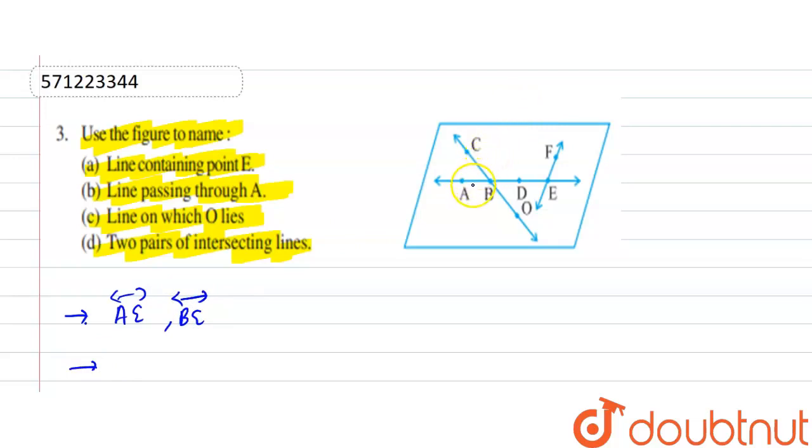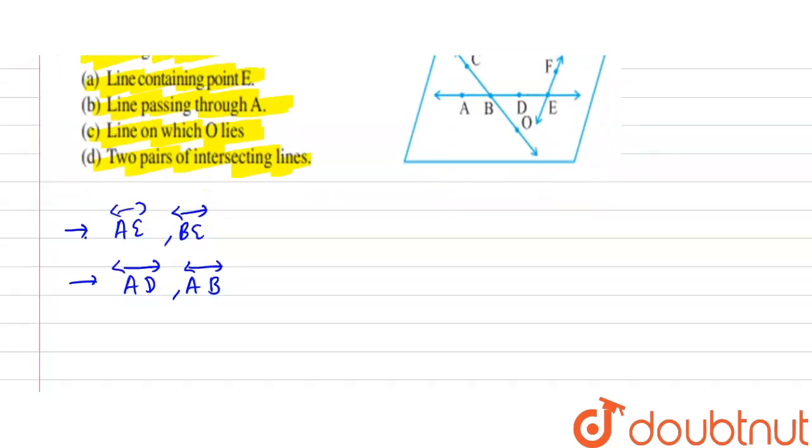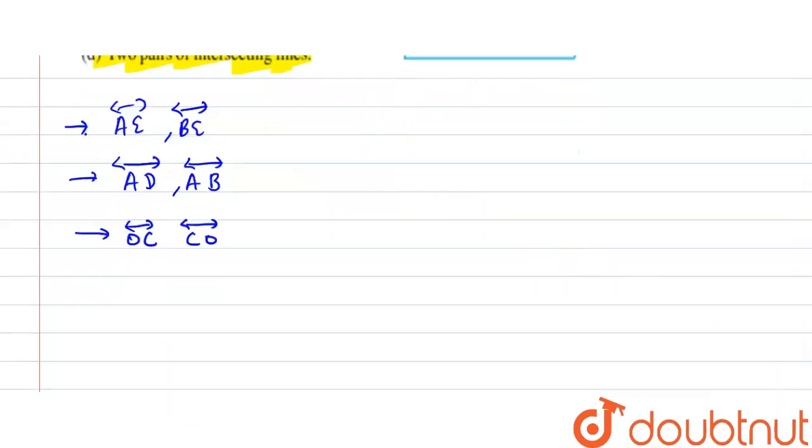Now third part is line on which O lies. Line on which O lies, that is OC and CO. And next is two pairs of intersecting lines.